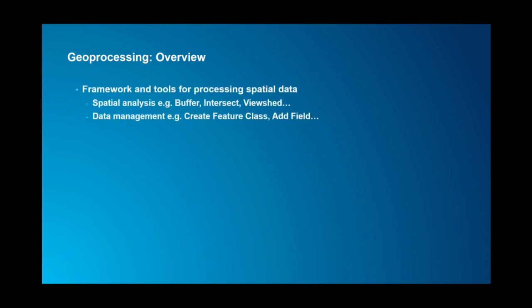Geoprocessing is a framework and set of tools for processing spatial data within ArcGIS generally. It's been available within ArcGIS Desktop, ArcGIS Pro, ArcGIS Server, and online. There are really two types to think about: spatial analysis — buffer, intersect, viewshed as examples — and data management, such as the ability to create new feature classes, add a field, or create a geodatabase.